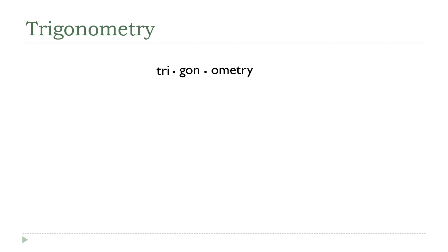But this gon part doesn't seem to really fit. Well, it starts to make more sense if you think about pentagons, hexagons, octagons. The gon part comes from the ancient Greek word gania, which referred to a corner or an angle. So if we combine those, we get trigon, which is an old school way of saying a triangle. And that makes the whole thing the study of measurements in a triangle.